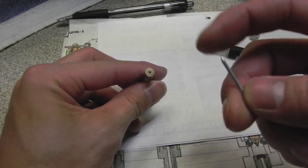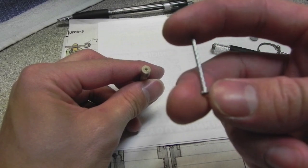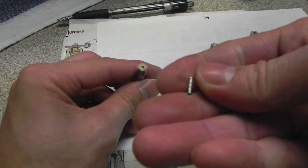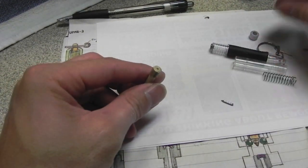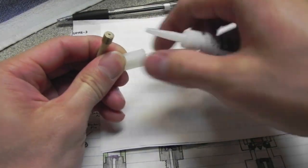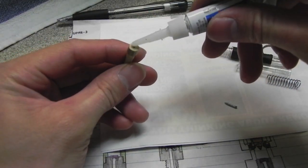And for the actual firing pin, just using this little nail that I clipped off. And I'm just gonna super glue it inside.